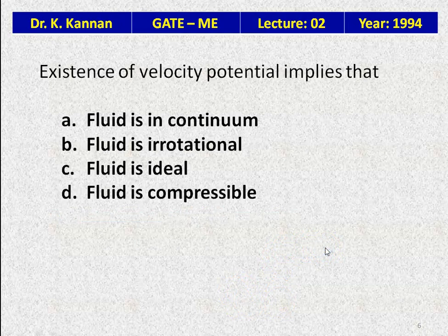The existence of velocity potential implies: the fluid is in continuum, fluid is irrotational, fluid is ideal, or fluid is compressible. The existence of velocity potential indicates that the fluid is irrotational.